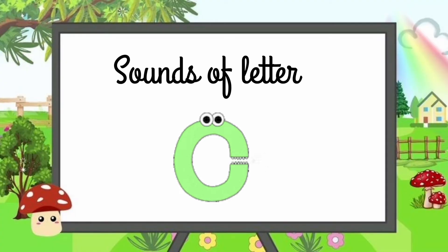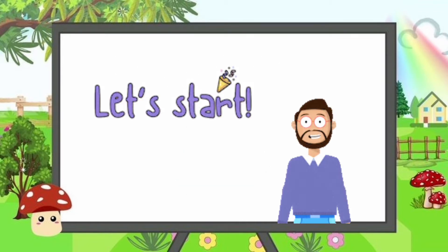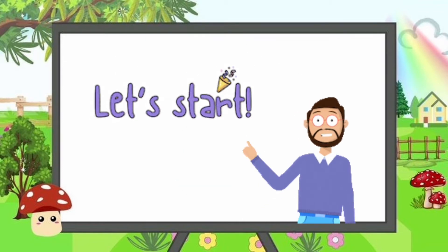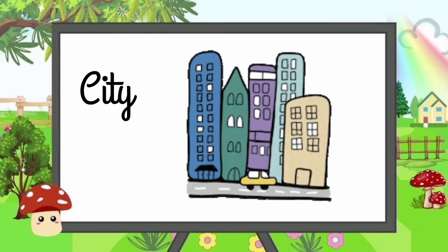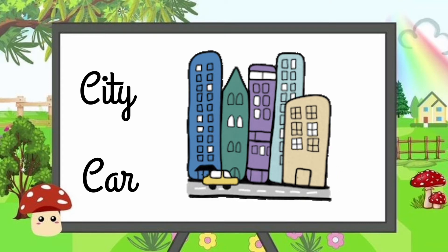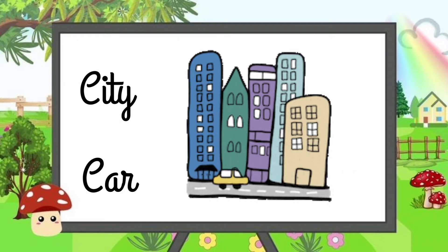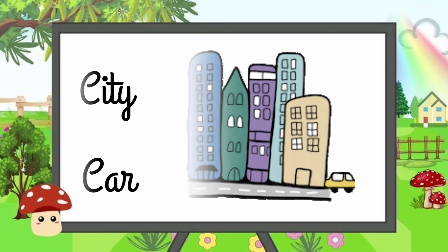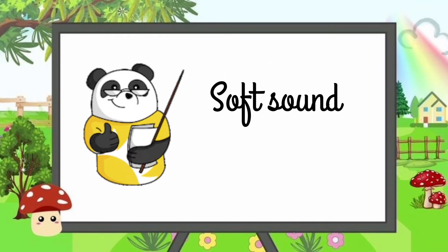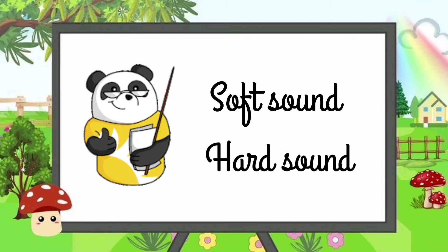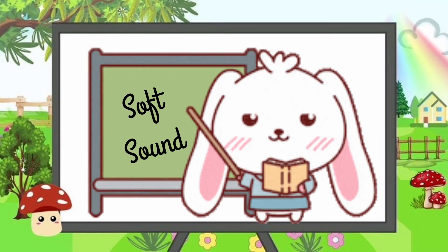Hello kids, today we will learn sounds of letter C. Let's start. We have two words: city and car. These two words start with the same letter, that is C, but both have different sounds. So we have two sounds for letter C: that is soft sound and hard sound. First, we will discuss the soft sound.